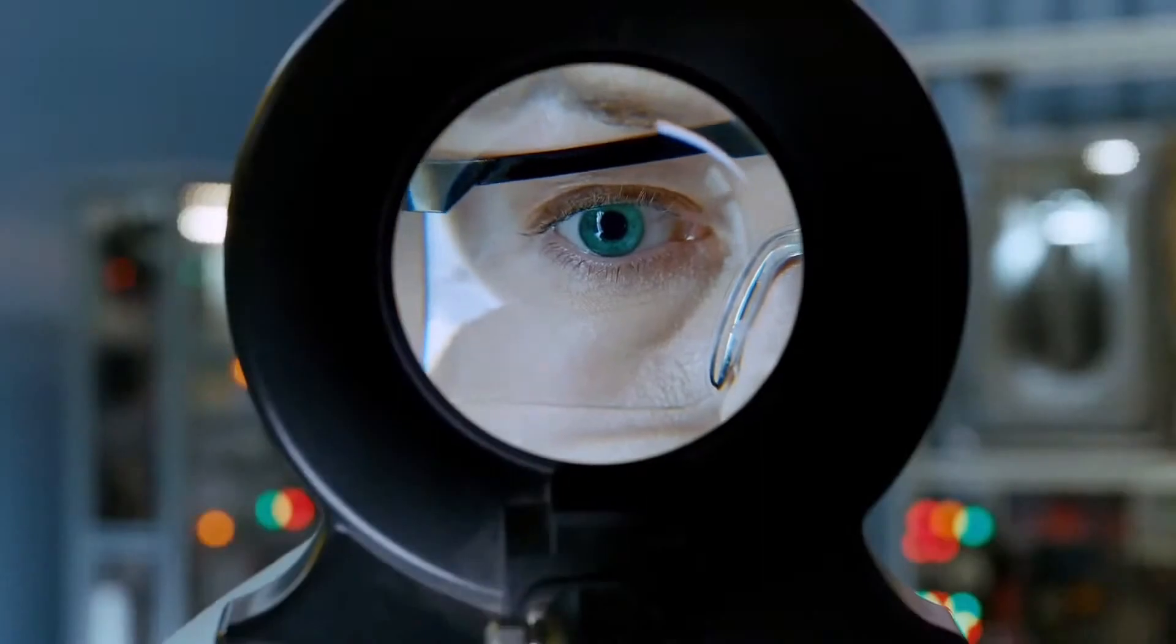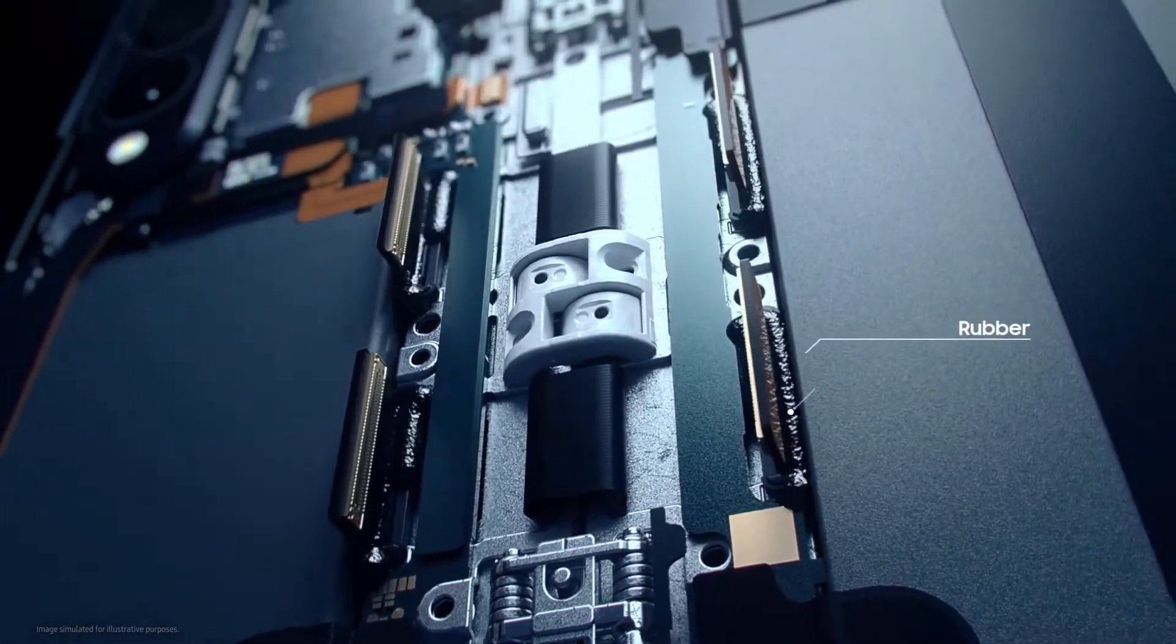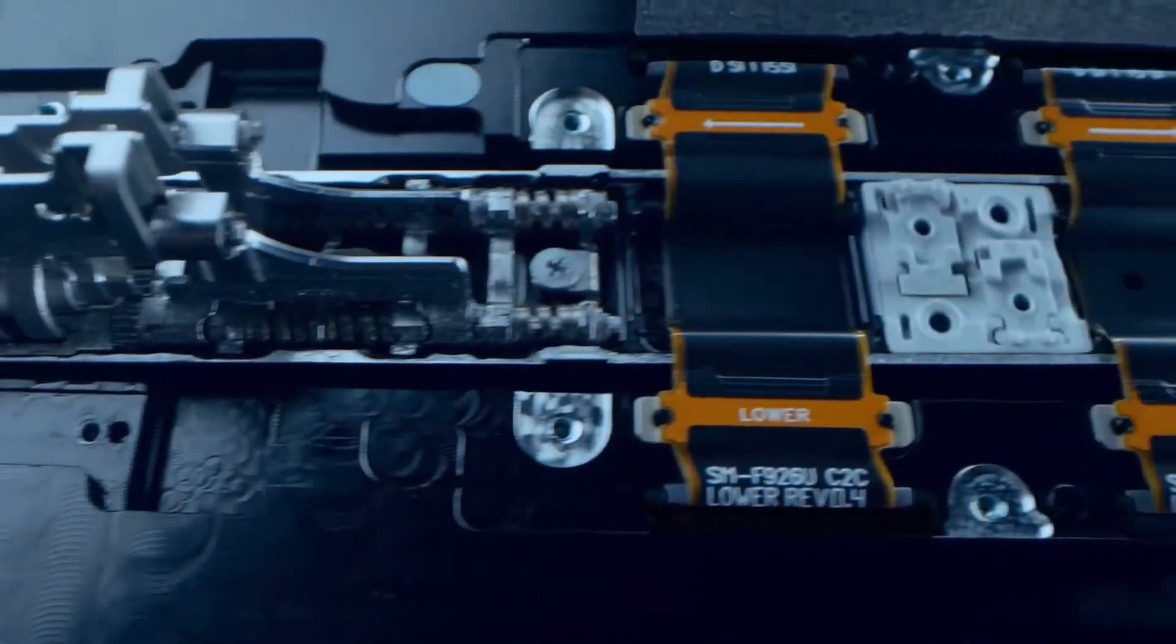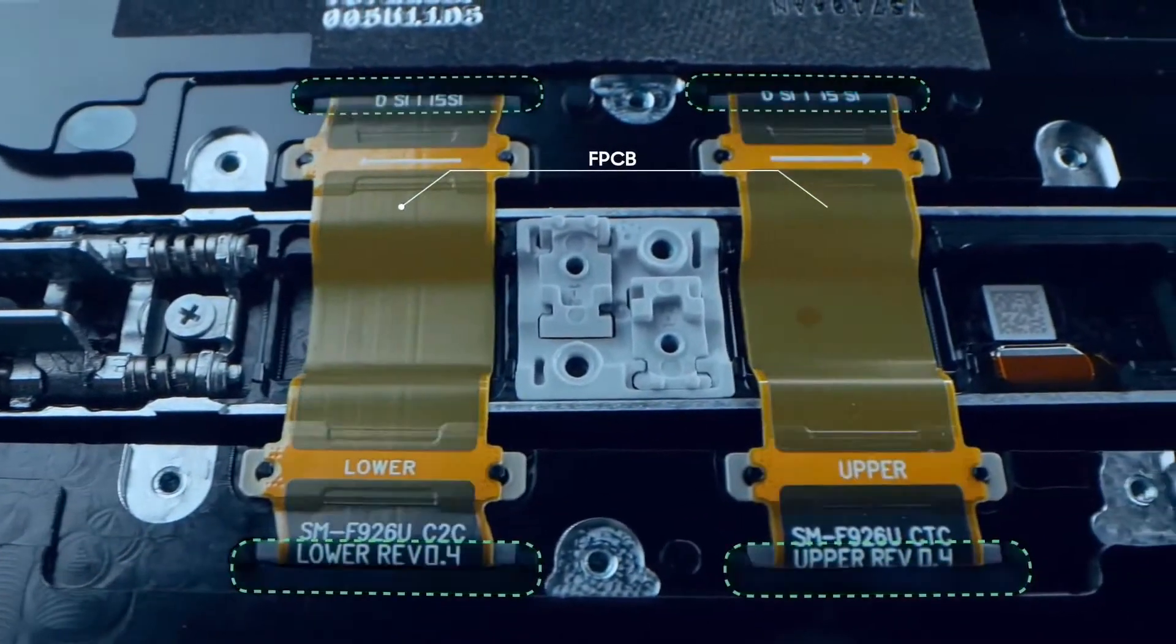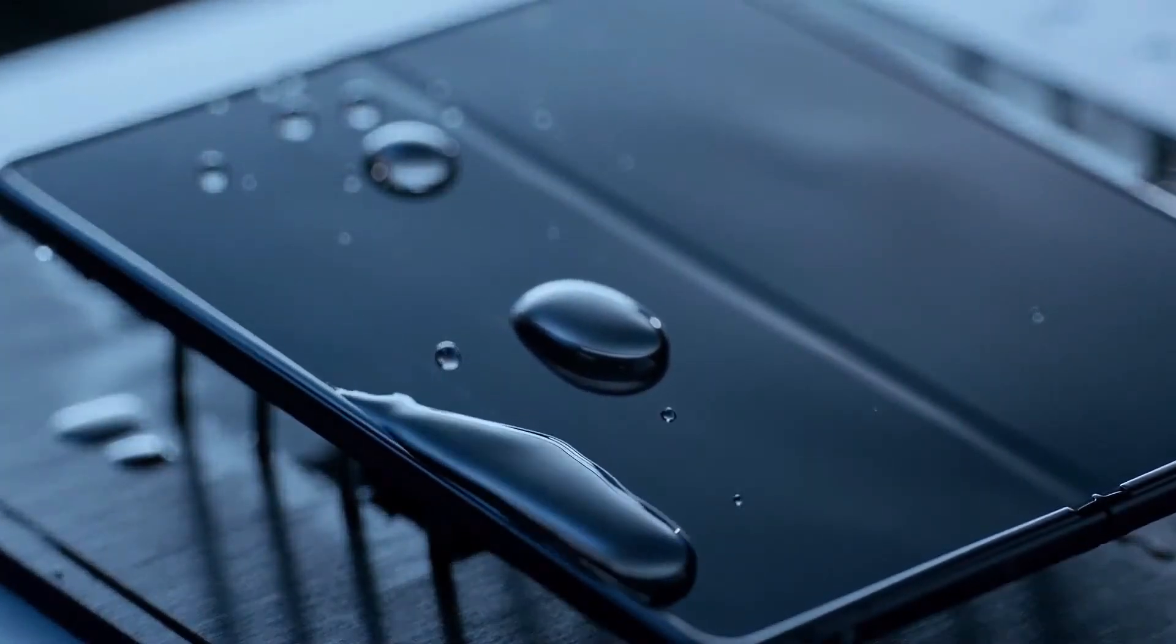Then, to protect the main board from shorting out due to water, we used rubber and CIPG. These materials seal the gap between the connecting ends of the flexible printed circuit board, shielding critical parts that are vulnerable to water exposure.